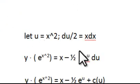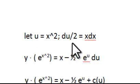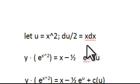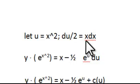Then we use u-substitution, letting u equal to x squared. The derivative is du equal to 2x dx, and dividing both sides by 2 we would have du over 2 equal to x dx.